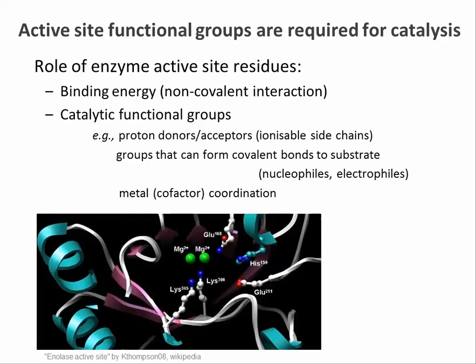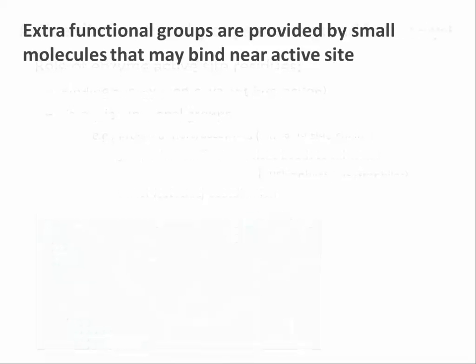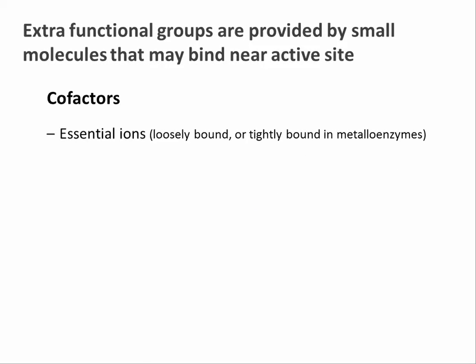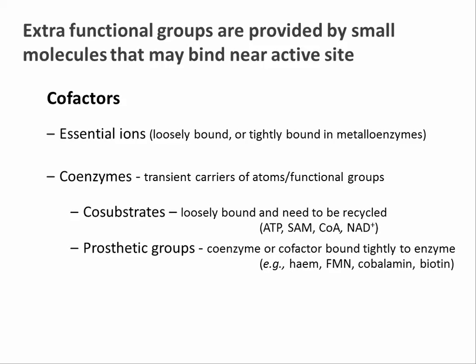The side chains of the enzyme's own amino acids can't always do everything by themselves and need cofactors. These come in a variety of flavors. Some enzymes need metal ions either as a loosely bound activator ion or as tightly bound metal ions in metalloenzymes. Many enzymes need coenzymes — small molecules that transiently carry atoms like hydrogen or functional groups like phosphate. These are often split into co-substrates like ATP or coenzyme A that are loosely bound and need recycling by a different enzyme, and prosthetic groups that stay in situ and are tightly bound to the enzyme. Many of the vitamins we need are the source of these coenzymes. Now you know why we need them.